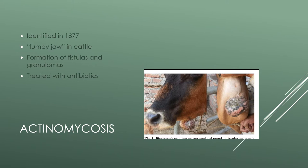In humans, actinomycosis commonly appears in the face and neck as chronic swelling, suppuration, and the formation of abscesses in the sinus tracts. It's commonly seen in immunocompromised patients, but it is not transmissible from human to human. If it gets into the lungs or other adjacent tissues, they will typically take a biopsy to help diagnose it and then treat with antibiotics.